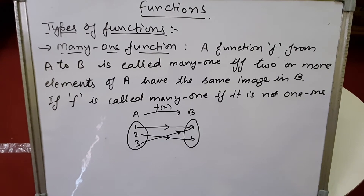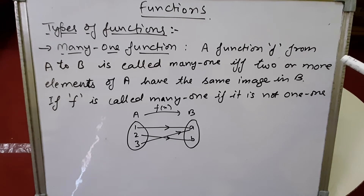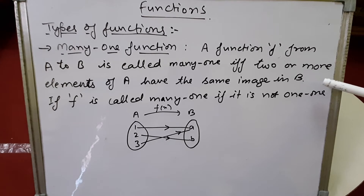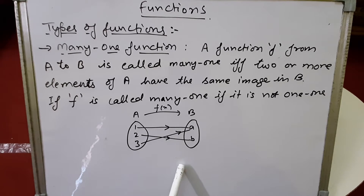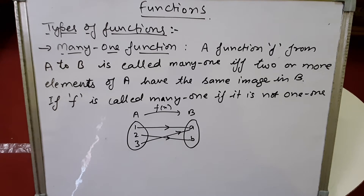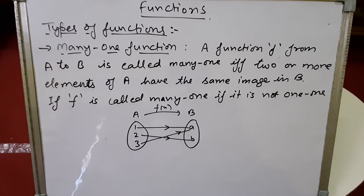Next is the many-one function. A function f from A to B is called many-one if two or more elements of A have the same image in B. We can also say that if a function is not one-one, then it is many-one. For example, if A = {1, 2, 3} and B = {a, b}, and both 1 and 3 map to image a, then two elements share the same image — making it many-one.